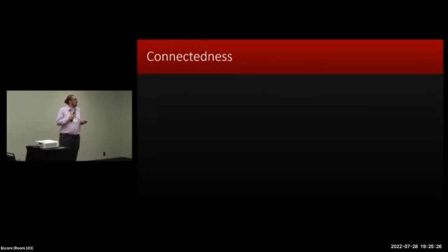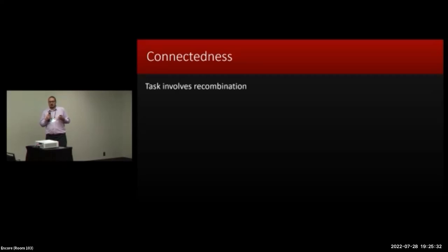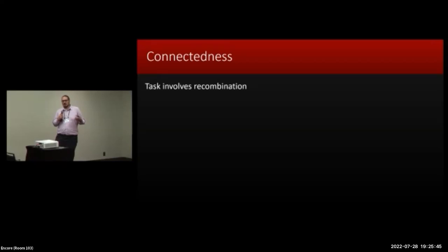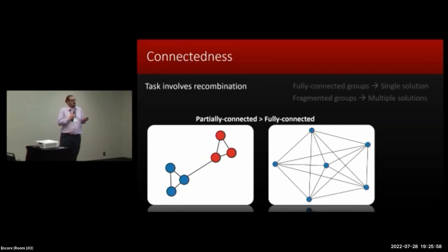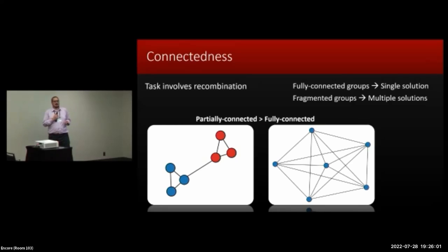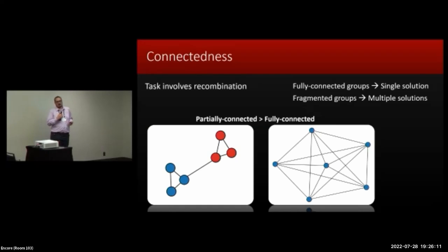There have been several psychological studies suggesting that if you break people down into groups and put them into a task where solutions can be recombined — a basic-level solution combined with another basic-level solution yields a more efficient and complex solution — when the task is structured that way, what's been observed is that when groups are partially connected, they tend to outperform groups that are fully connected. The reasoning is that fully connected groups tend to focus in rather quickly on a single solution, whereas fragmented groups tend to develop multiple solutions independently, which are then later recombined into a more complex solution.